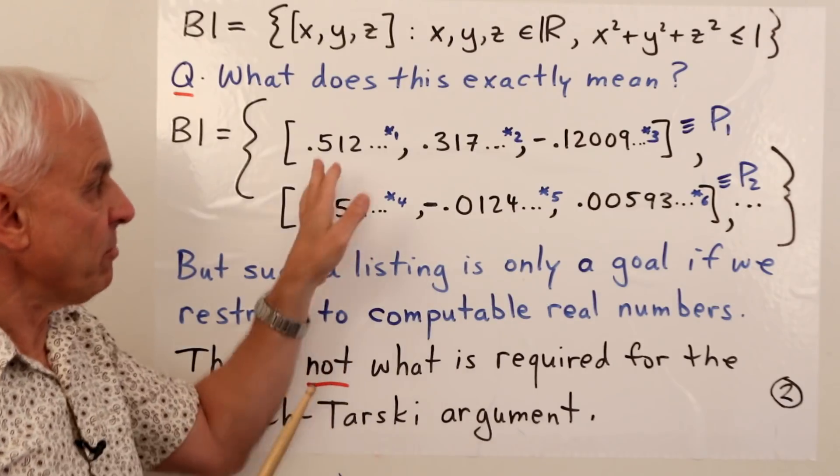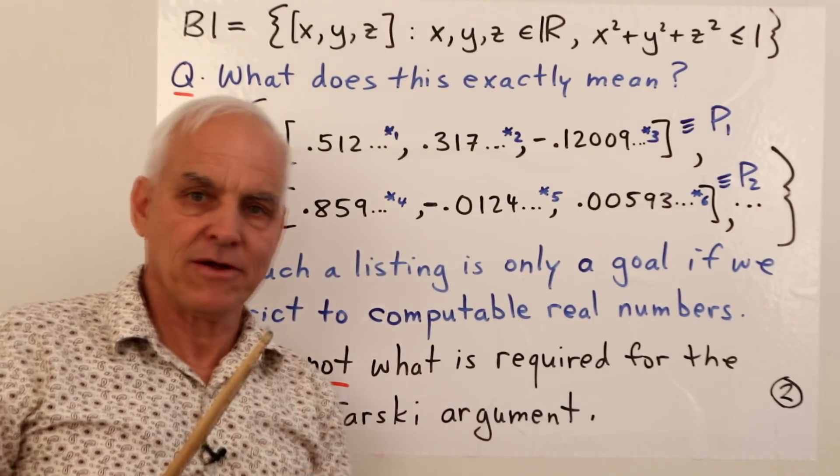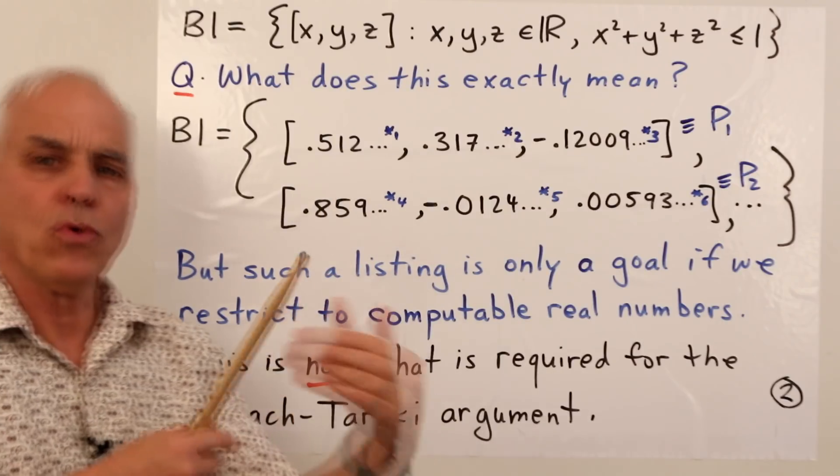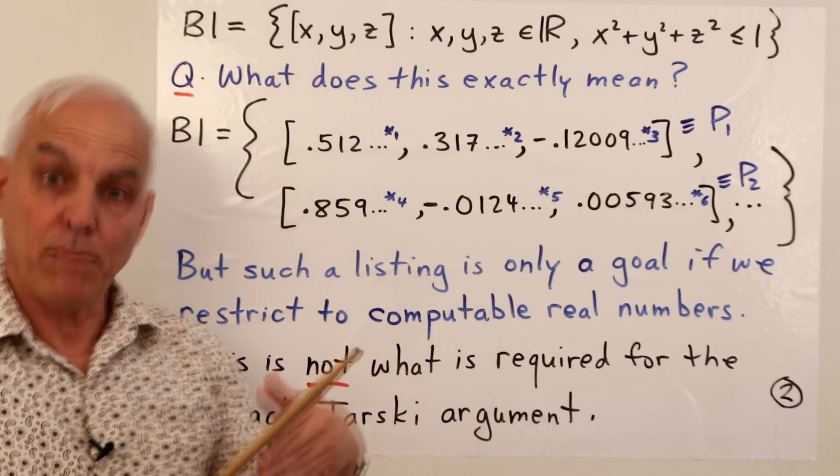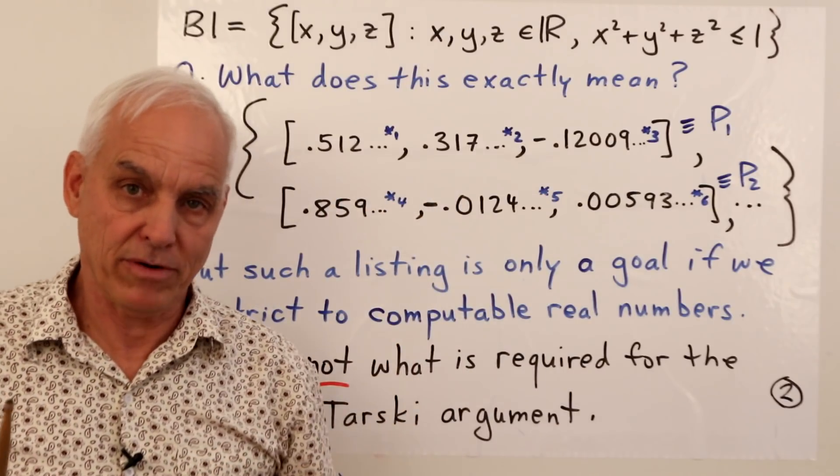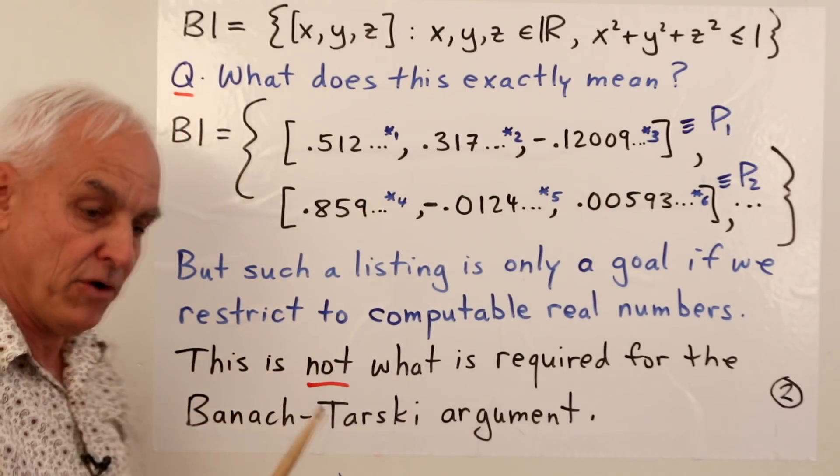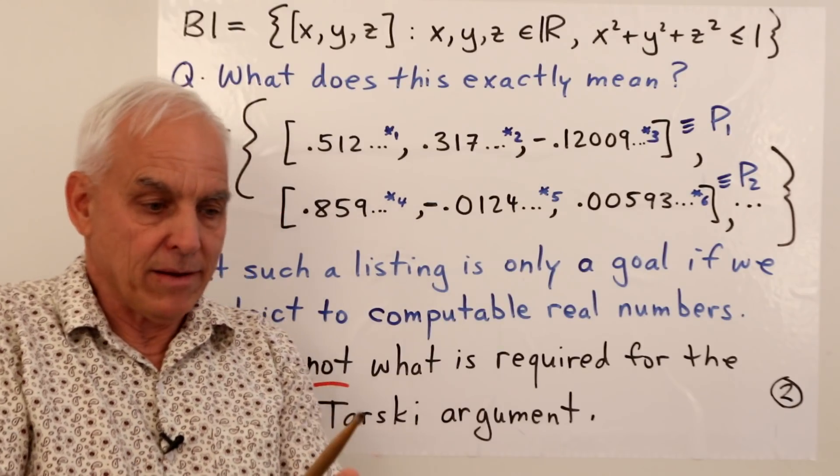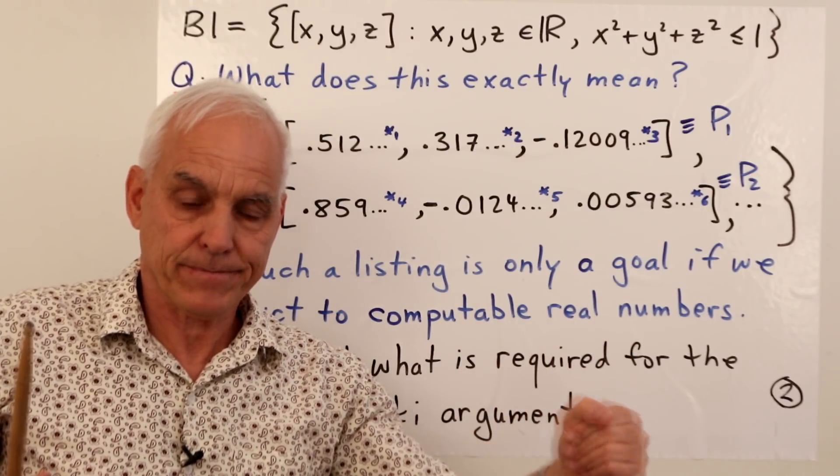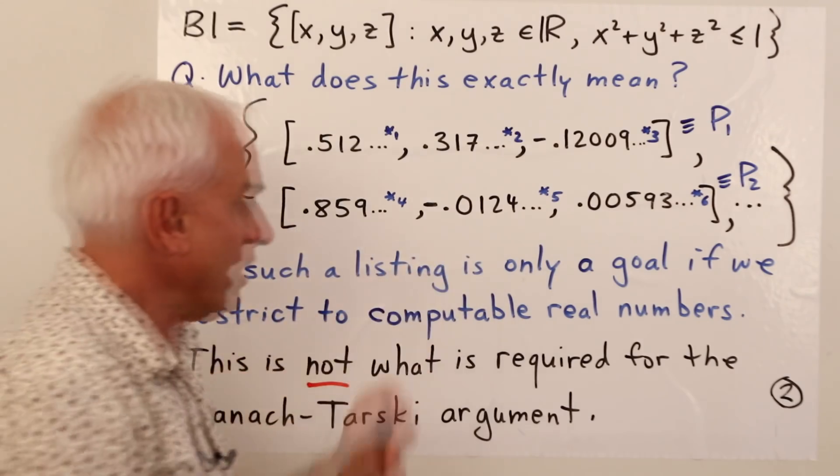Now this is obviously inadequate because these are potentially infinite decimals and we haven't specified how they continue past the first three or four digits. So what we really need to make sense of something like this is some additional information, and I've denoted that by these sort of asterisk footnotes. So corresponding to this thing there should be a footnote somewhere that explains what is the rule or the procedure or the computer program that generates the digits of this first x real number, and similarly for all the subsequent real numbers that appear. And also for subsequent points there should be corresponding footnotes somewhere where you can read what the algorithms are that generate these supposed infinite decimals.